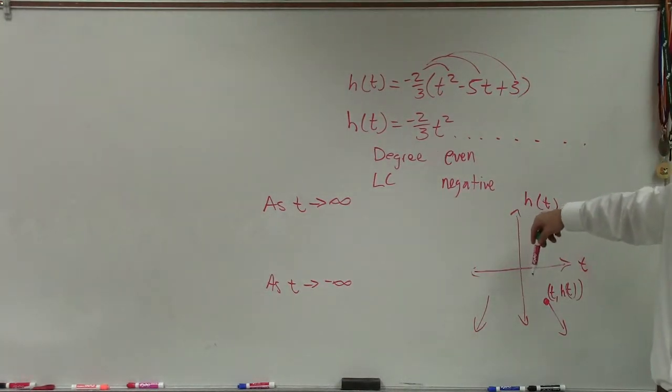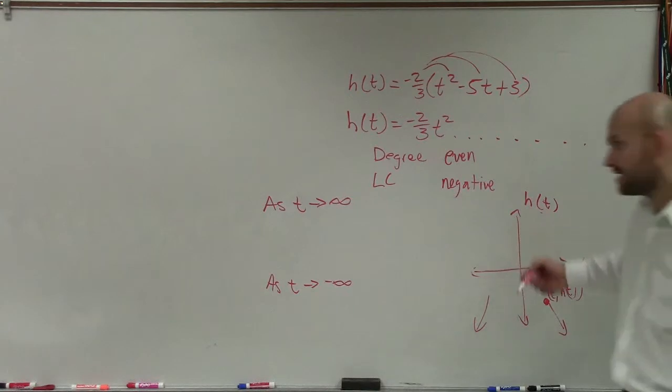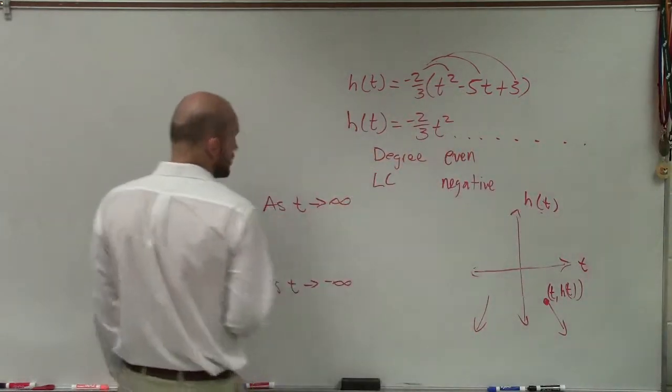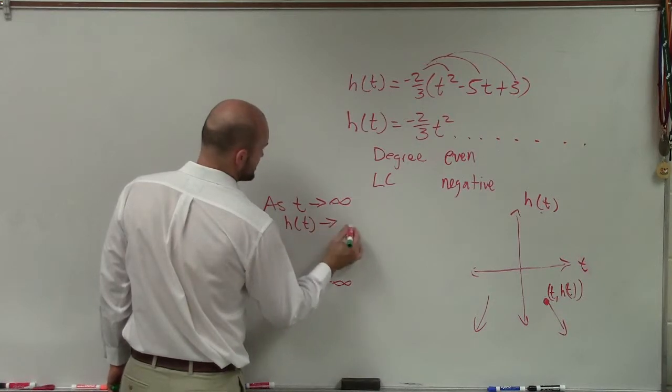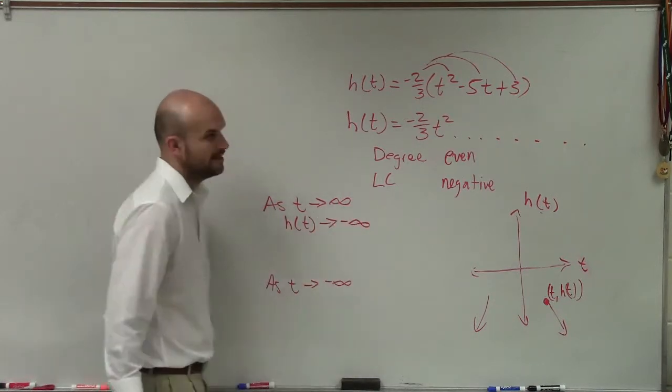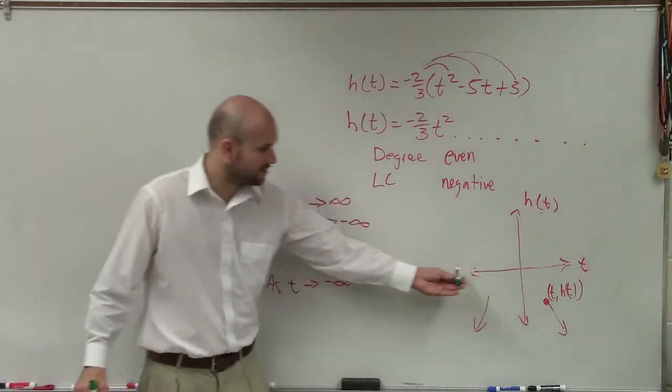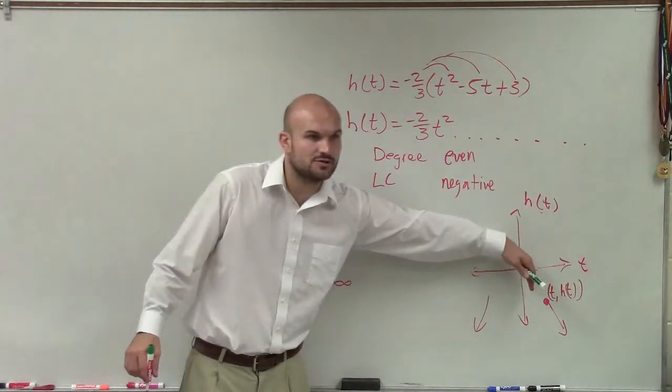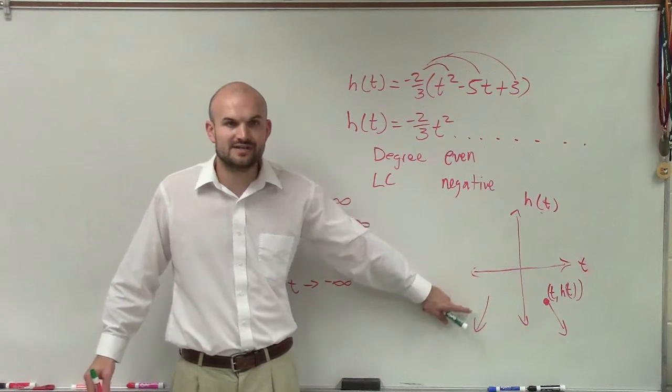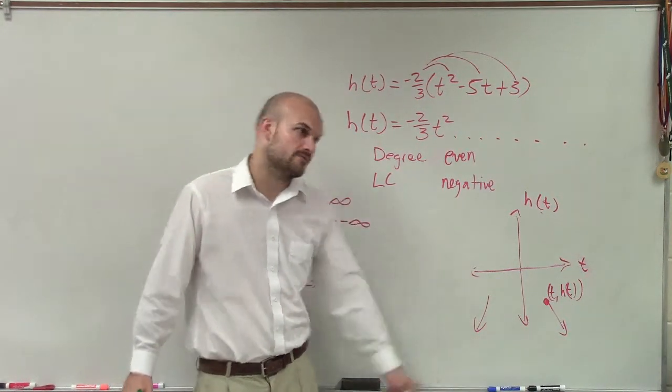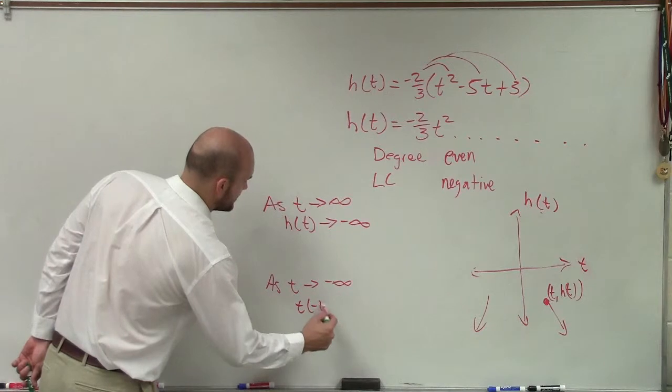Down. And that's going to be your h(t) values. And those h(t) values, if they're going down, are they going to negative infinity or positive infinity? Negative infinity. So you can say as t approaches infinity, h(t) approaches negative infinity. And then as t approaches negative infinity, so as you move your t values to the left, where is my h(t) values going? Down, which is going to be negative infinity.